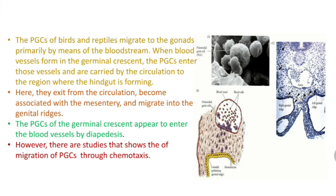PGCs in birds and reptiles arise from the epiblast region and migrate to their respective gonads primarily by means of the bloodstream — entirely different from anurans. When blood vessels form in the germinal crescent, the PGCs enter those vessels and are carried by circulation to the region where the hindgut is forming.